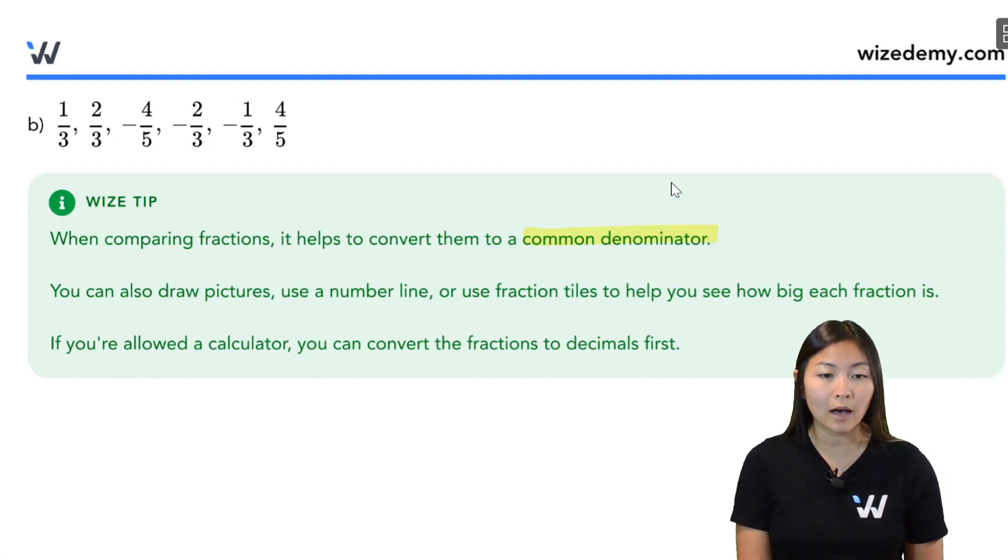For common denominator, let's look at all the denominators we have. We have some threes and we also have some fives. So the easiest way to find the common denominator is to do three times five. And it turns out that three times five, which is 15, is the least common denominator in this case. You don't need the least, you just need a common denominator.